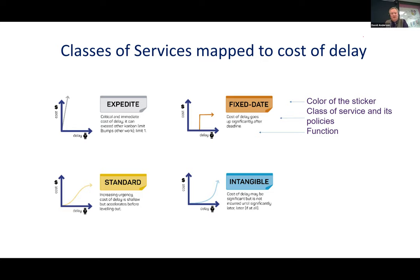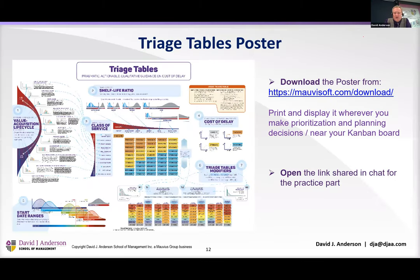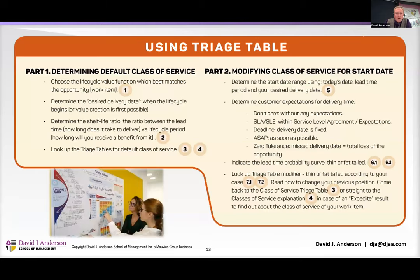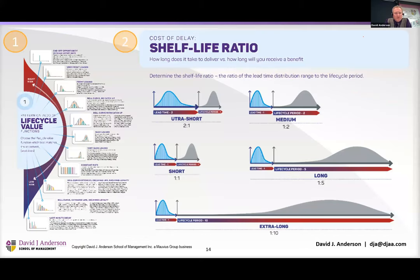More recently we realized people struggle to quantitatively determine the right class of service — they were simply using gut feeling. So we developed something called the triage tables and created a poster you can download from movisoft.com. This poster walks you through a seven-stage mechanism for determining the correct class of service for an item.